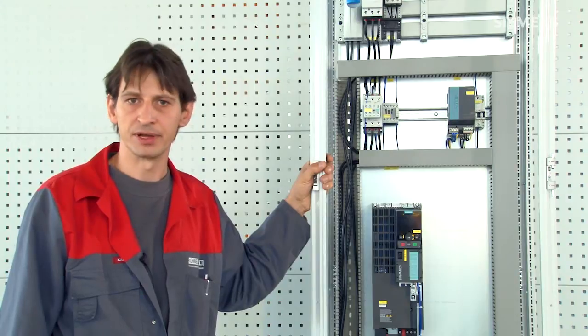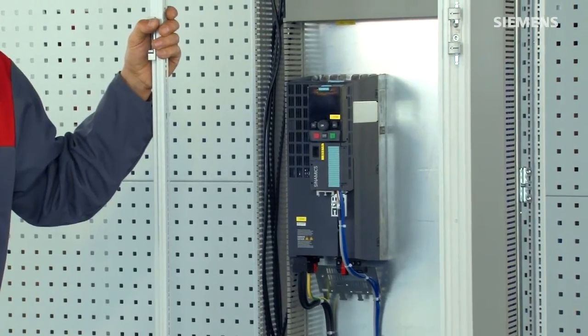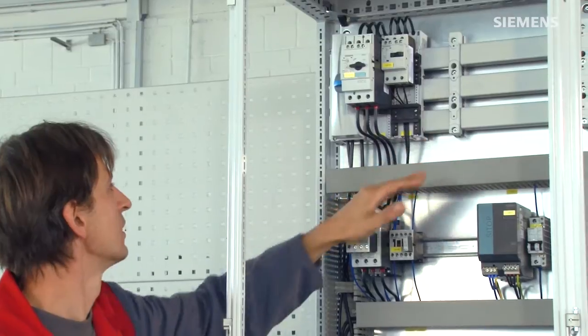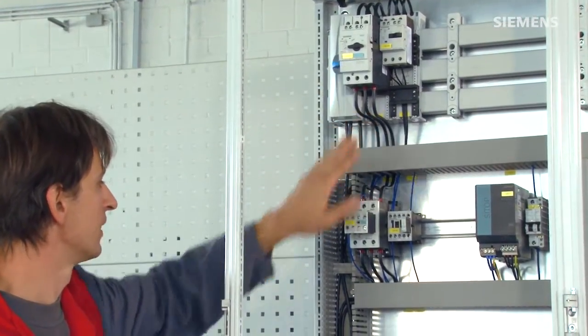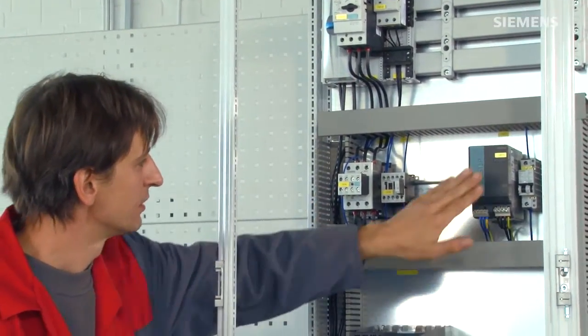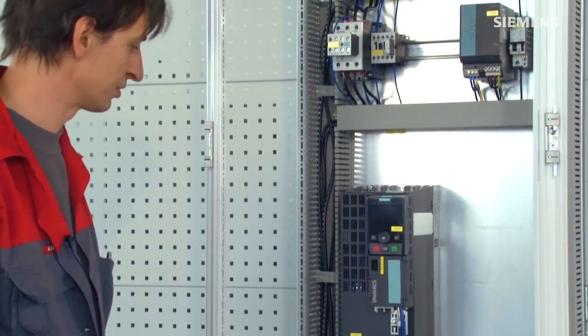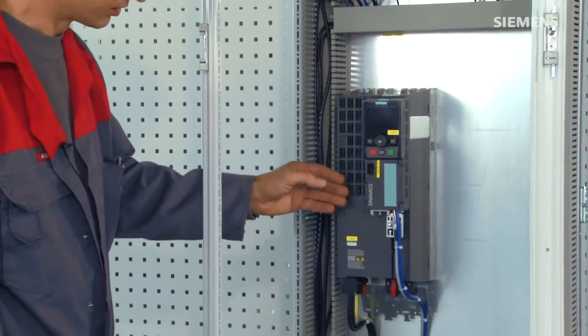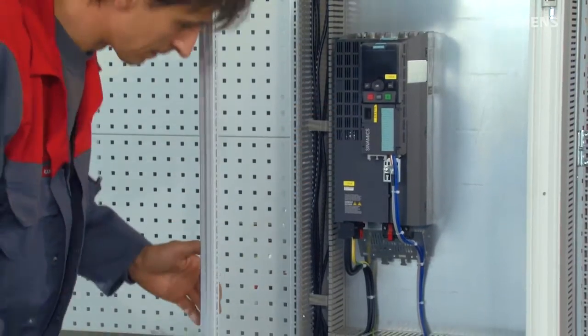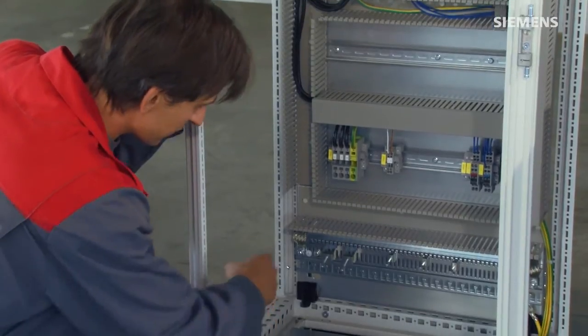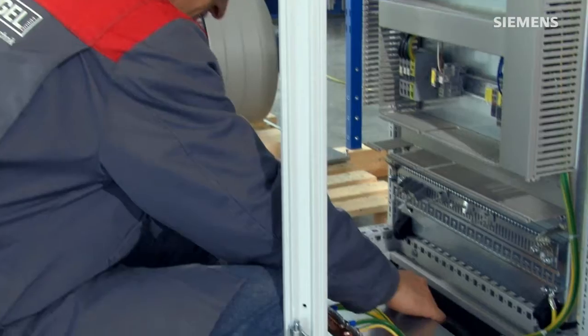Today I will be using a G120 to demonstrate an EMC compliant layout. This is the layout divided into zones: in-feed, bus bar system, circuit breaker, line contactor, power supply, Sinamics G120 consisting of a power module and a control unit, terminal strip, and at the bottom the EMC rail.